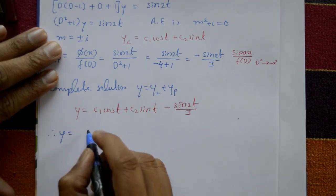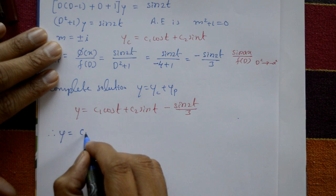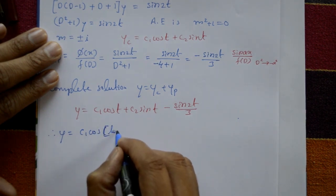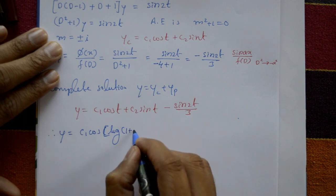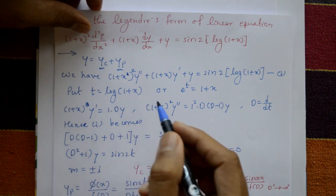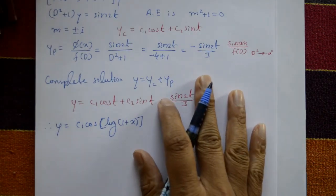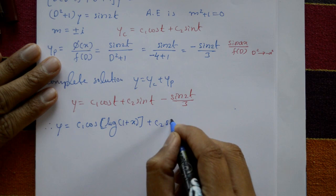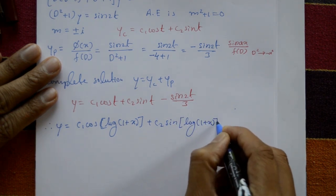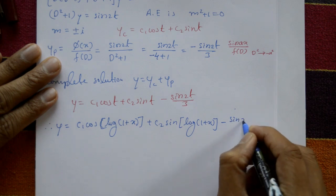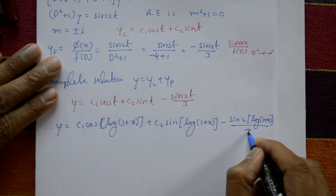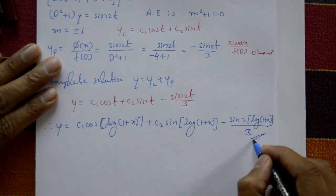Therefore, the complete solution is y = c₁ cos[log(1 + x)] + c₂ sin[log(1 + x)] − sin(2 log(1 + x)) / 3. Since t = log(1 + x), this is the required solution.